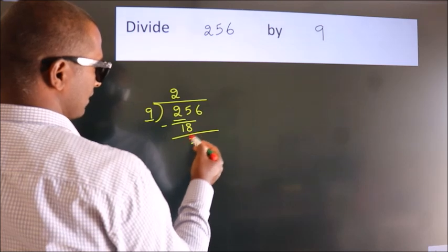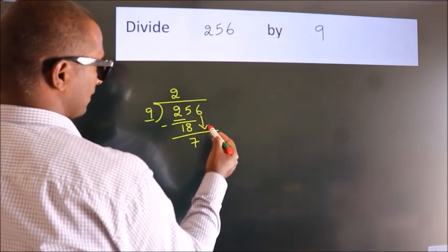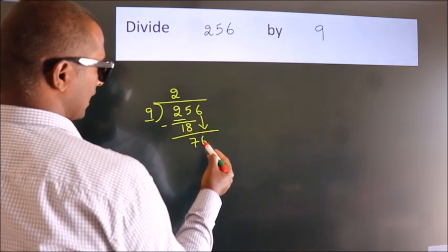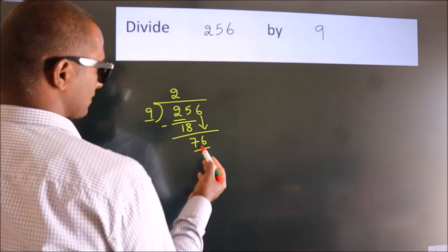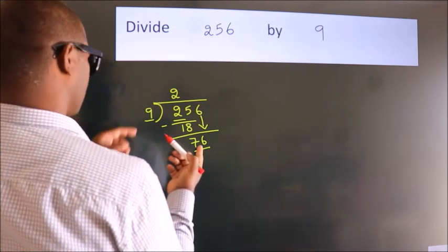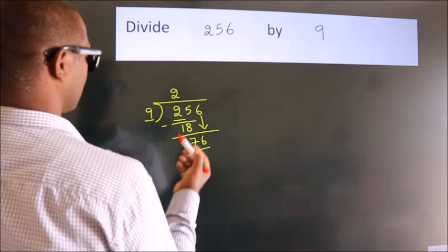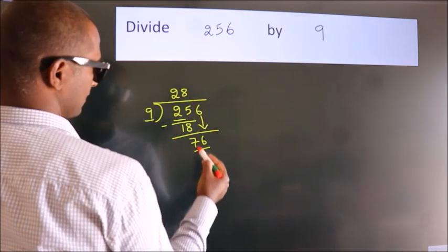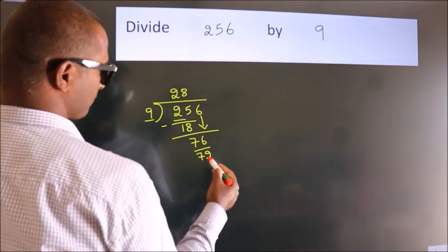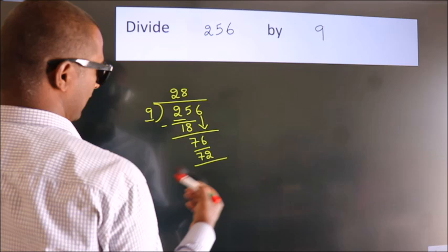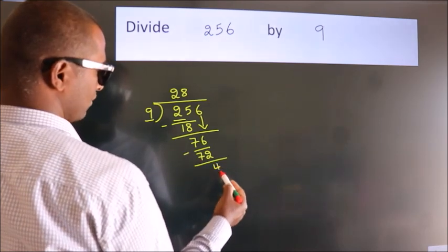After this, bring down the beside number, so 6 down. So 76. A number close to 76 in the 9 table is 9 times 8 equals 72. Now we subtract. We get 4.